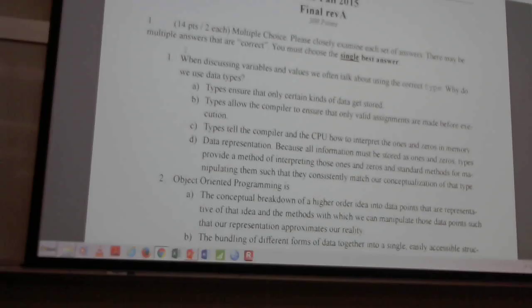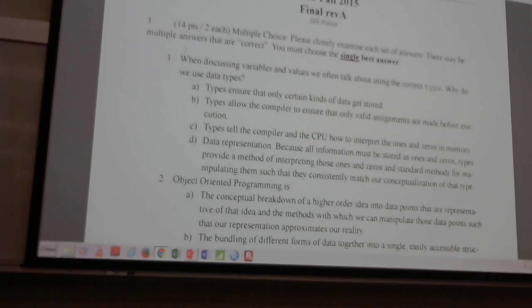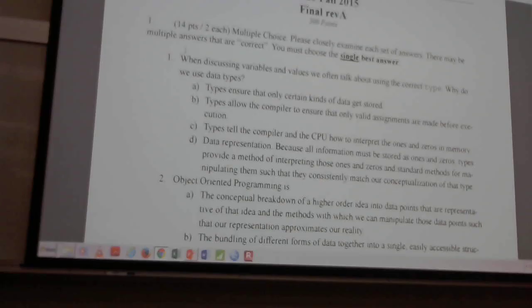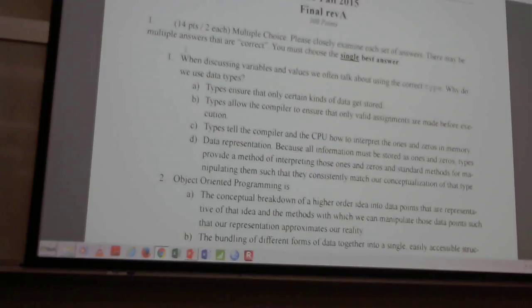Number one: we'll discuss variables and values. We often talk about using the correct type. Why do we use data types? Which of those is the best answer about why you use data types? There's a single best answer. Let's look at A first — does A make any sense? A doesn't make any sense. We don't want to make sure that only certain kinds of data get stored; we want to be able to store any kind of data we want.